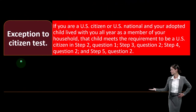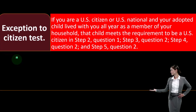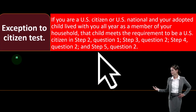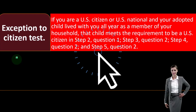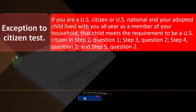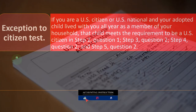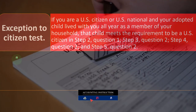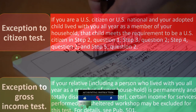Exception to the citizen test: if you are a U.S. citizen or U.S. national and your adopted child lived with you all year as a member of your household, that child meets the requirement to be a U.S. citizen in step two question one, step three question two, step four question two, and step five question two.